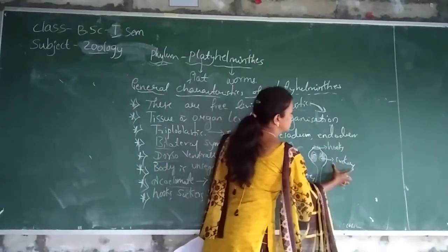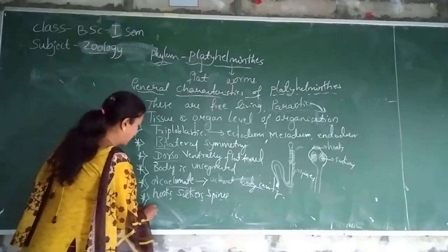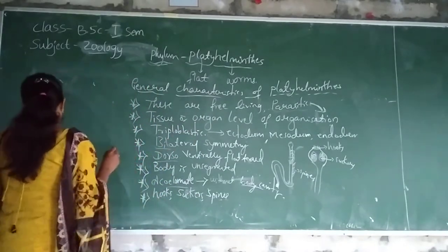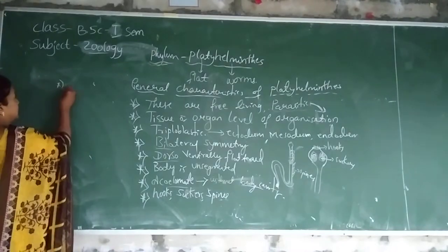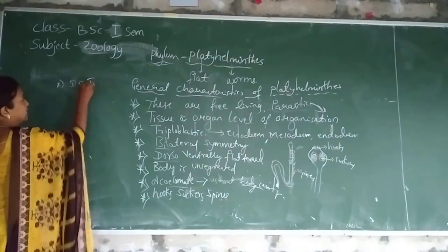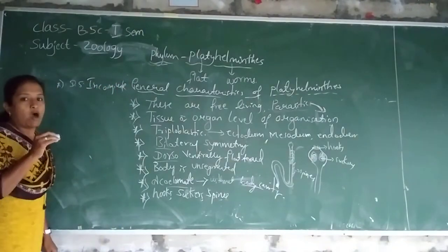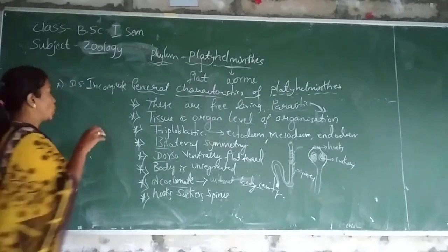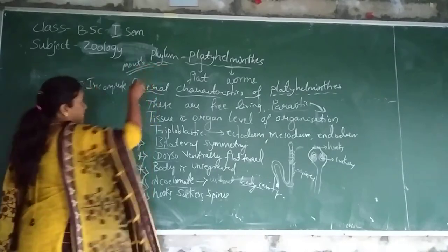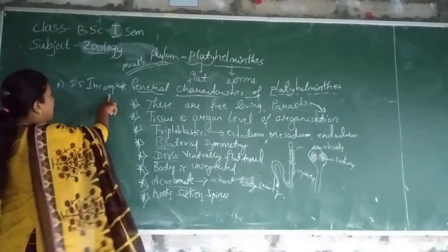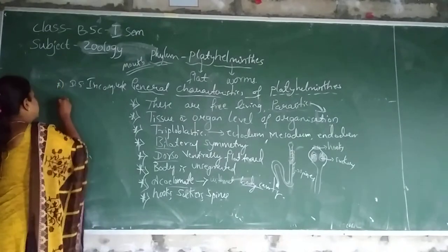That is the main character — hooks, suckers, and spines are present on the body of the platy elemntis. The next character is the digestive system is incomplete. Digestive system incomplete means mouth to anus is absent. Only the mouth is present, but the anus is absent in platy elemntis — that is why the digestive system is incomplete.